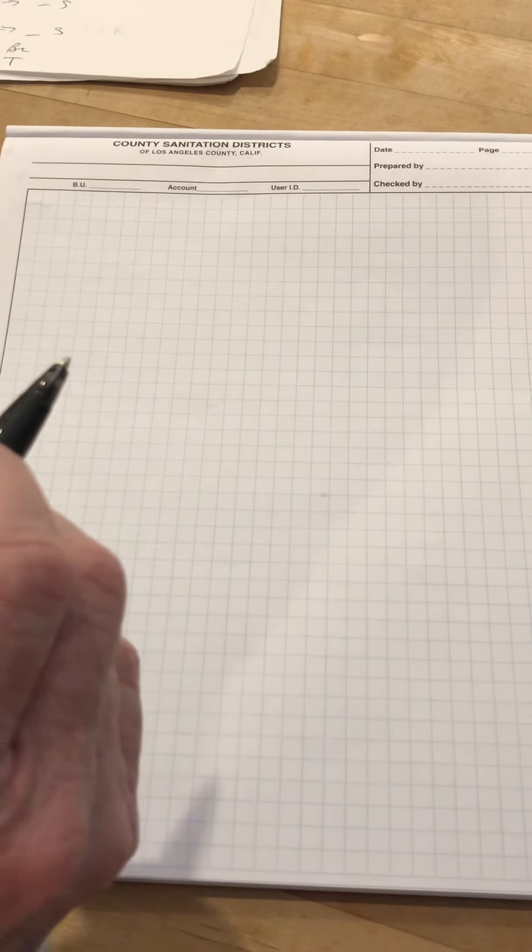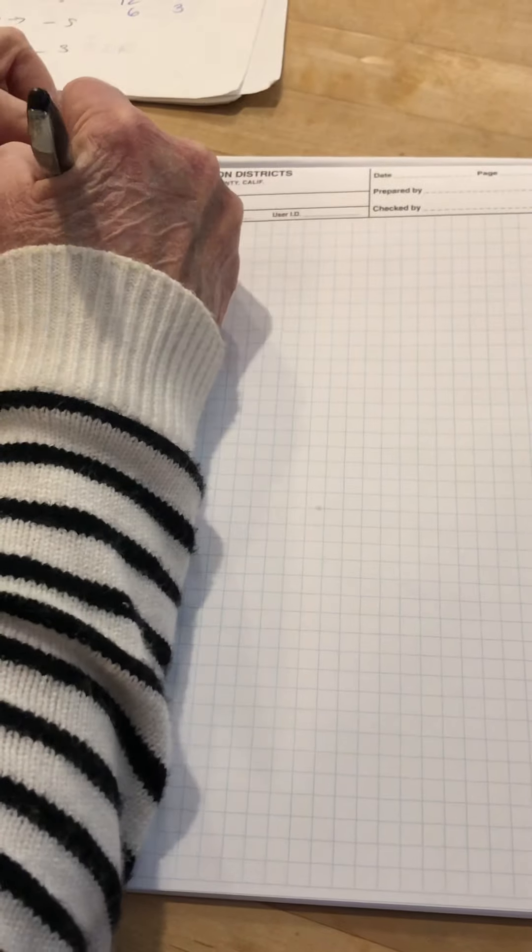So, today we're starting with Chapter 9, which is called Stoichiometry.